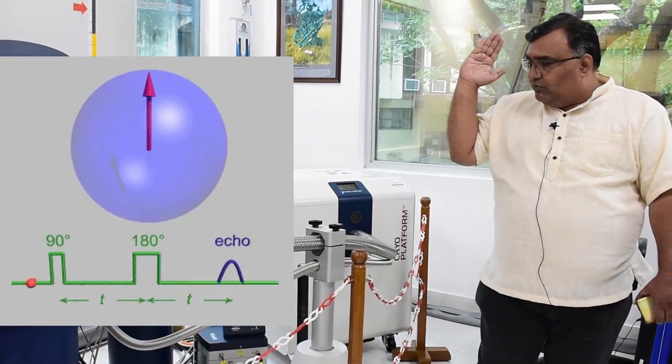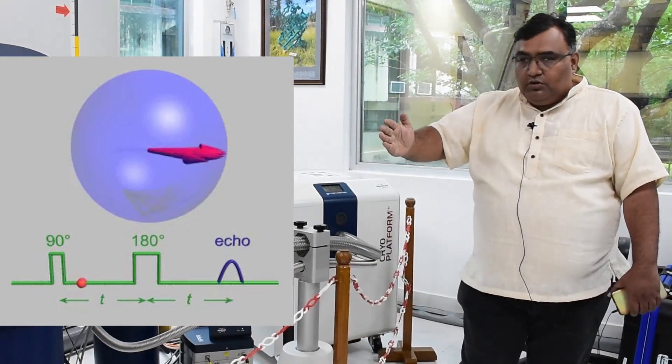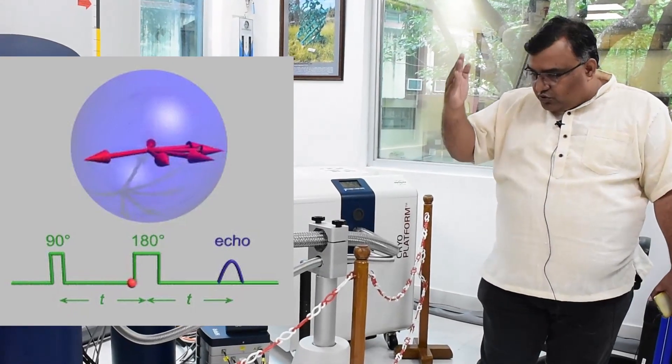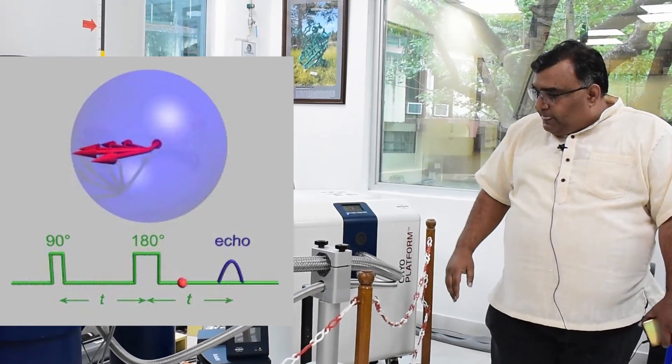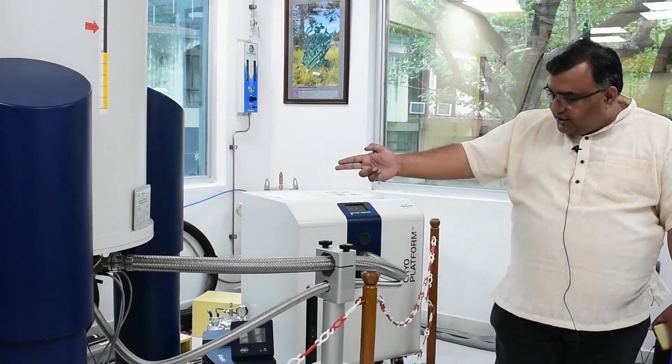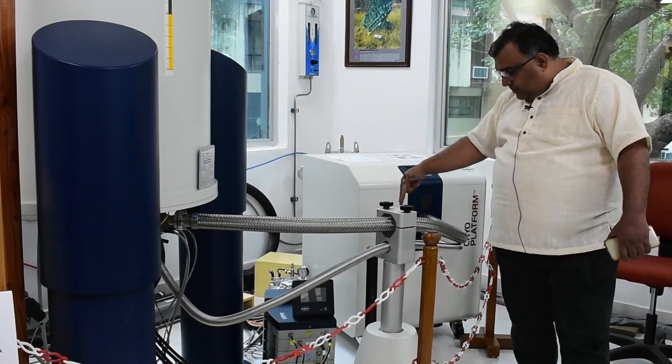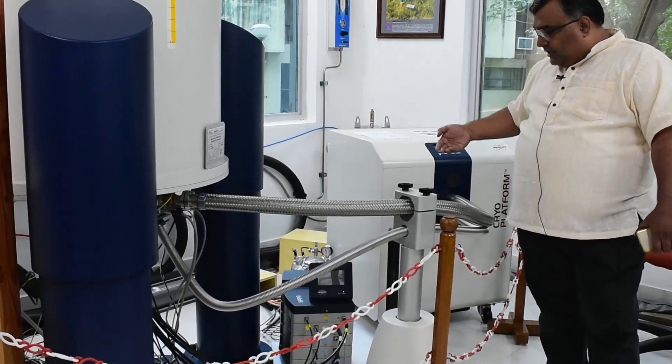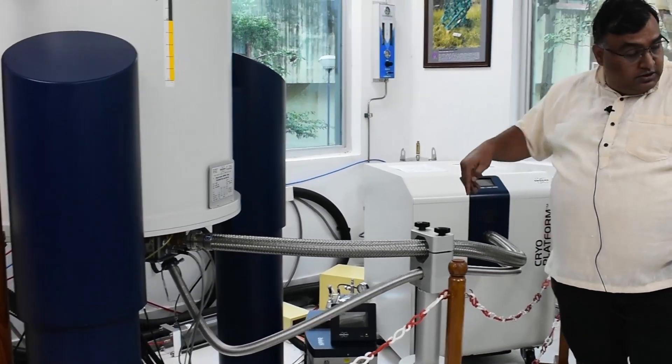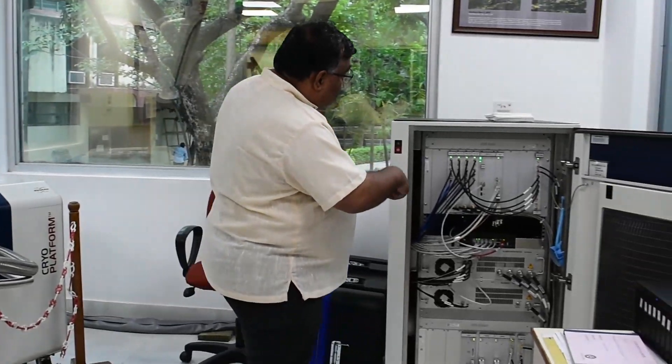And once the coil hits the pulse, the magnetization that is aligned along plus Z gets tilted into if it is a 90-degree pulse, gets into the XY plane. Now on the return path, the detector detects it. It comes again to the pre-amplifier, cold pre-amplifier first, then the pre-amplifier and the pre-amplifier further enhances the signal and you get it back to a detector.